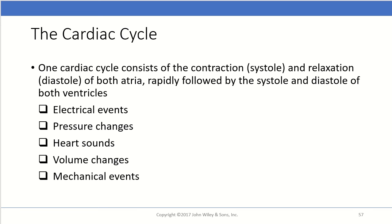Today we're finishing up the third and final lecture for the heart lecture. We're starting by talking about the cardiac cycle. One cardiac cycle consists of a contraction and a relaxation of both the atria, rapidly followed by systole and diastole of both ventricles — contraction and relaxation of the atria, then contraction and relaxation of both ventricles.